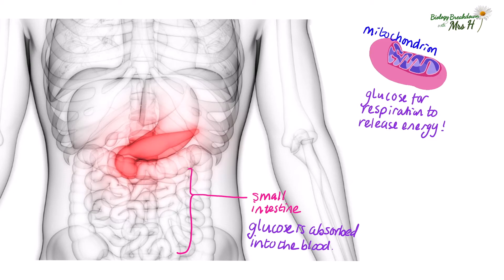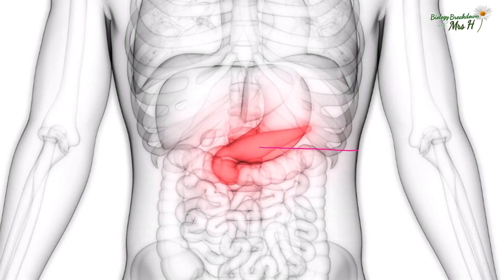So if the glucose concentration in the blood is too low, we will not be able to get enough glucose to our cells for respiration. If our blood glucose concentration is too high, then one of the problems is that water will move out of the cells by osmosis, leading to us becoming dehydrated and worse. So this could be quite dangerous, meaning it is very important to balance the blood glucose concentration.